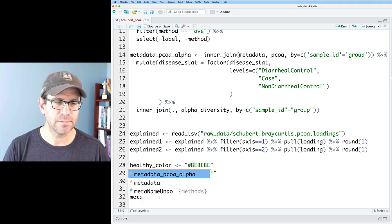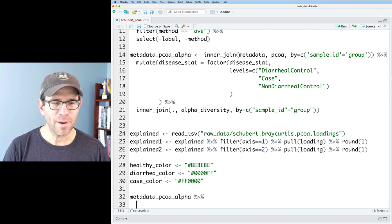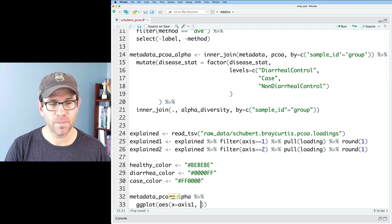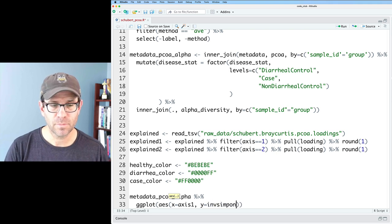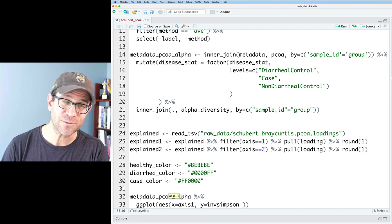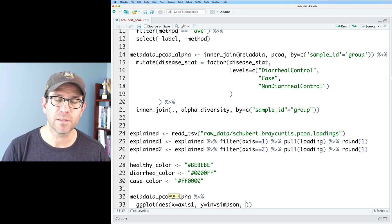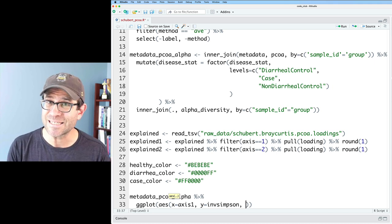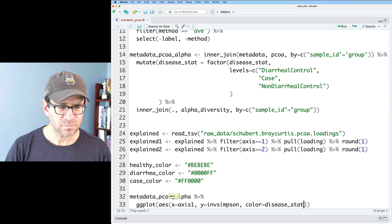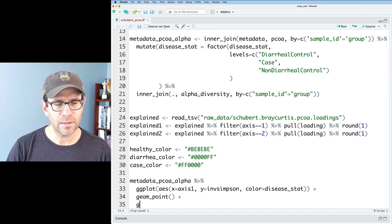So I'll start with my metadata alpha PCOA alpha data frame. We'll pipe that in a ggplot. And our mapping to our aesthetics, the x is going to be axis one, y I'm going to do inverse Simpson. That is the metric of diversity that we used in that paper. You could use Shannon or any other diversity index you'd be interested in. And then color, I will do disease stat. And I will then pipe that to geom point. And I like theme classic.